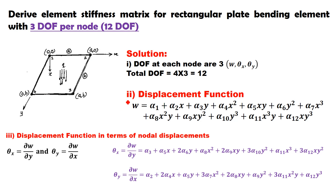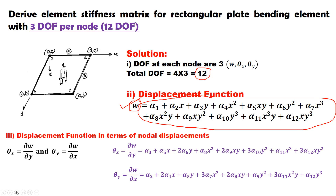Step 2 of the stiffness matrix formulation is to write down the displacement function for the element. Since it is a bending element with 12 degrees of freedom, we use the Pascal triangle to pick up 12 terms to formulate the polynomial of deflection W. The displacement function means writing the polynomial function for deflection W.